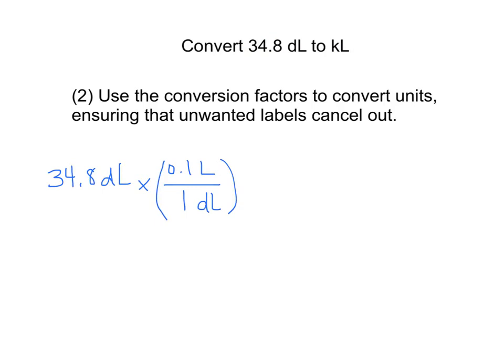Now that helps me because it gets rid of this unit label of deciliter, and now I've got the problem essentially converted into liters. That's only part of the solution, so I'm going to continue to use my conversion factors expressed as fractions until all of my unwanted labels cancel out. I'm going to make sure that liters is in the denominator in this case, and then the unit that I want my answer in, kiloliters, is in the numerator. I just need to remember my conversion factor: one kiloliter equals one thousand liters.